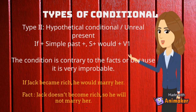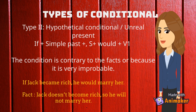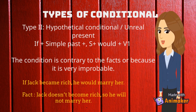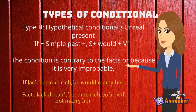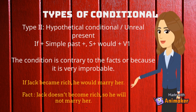The second type of conditional sentence is called hypothetical conditional or unreal present. It is called so because the condition is contrary to the facts or because it is very improbable. We use this conditional to imagine what it would be like if things were different. The pattern for this type is: if + simple past + subject + would + bare infinitive. For example, 'if Jack became rich, he would marry her.' The fact of this sentence is: Jack doesn't become rich, so he will not marry her.